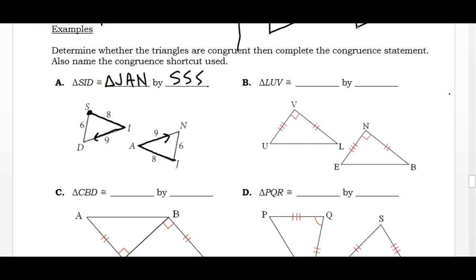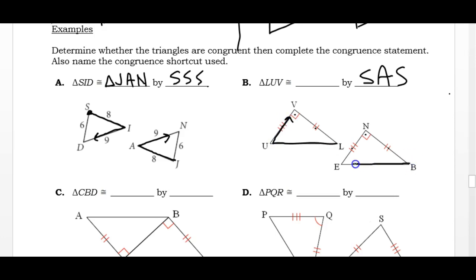For the second problem, I have a side, an angle, and a side — Side-Angle-Side. I started with L, went toward U, and up to V. The triangles are oriented the same way, so it's easy to go the same direction: triangle BEN.